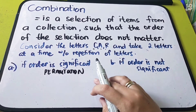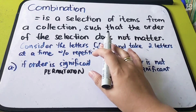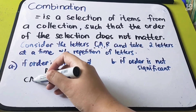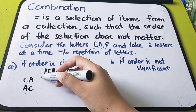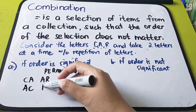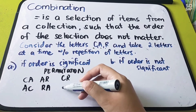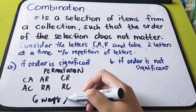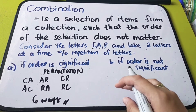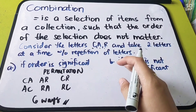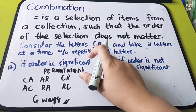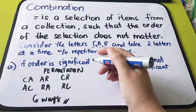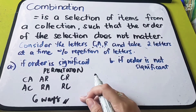For example, what are the two letters we can take from C-A-R? We have C-A, and also A-C. Next, we have A-R and then R-A. Next, we have C-R and then R-C. So we have six ways to arrange the two letters of C-A-R. When the order is significant, you include all arrangements.